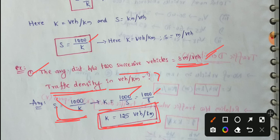So K means traffic density. So this is how we measure using the formula.